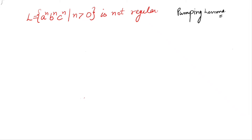Let us look at the example today: L equals a raised to the power n, b raised to the power n, c raised to the power n, such that n is greater than 0, is not regular. Pumping lemma is used to prove that the given language is not regular. The given language means equal number of a's followed by equal number of b's followed by equal number of c's, and we have to prove this language is not regular.